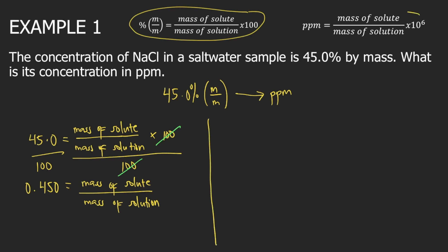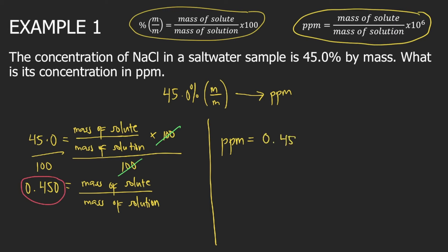So 0.45 is your mass of solute divided by mass of solution. Then we use the formula for PPM: PPM equals mass of solute divided by mass of solution — which we just solved as 0.45 — times 10 raised to 6, or 1 million. Solving this gives 450,000 PPM. So this is the answer to example one.